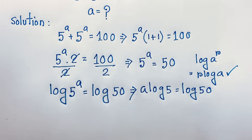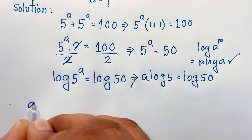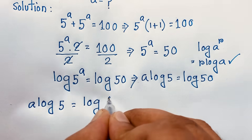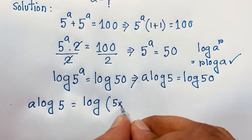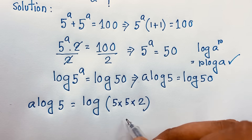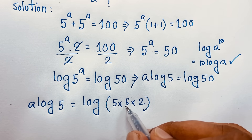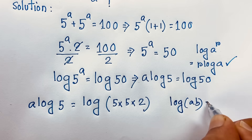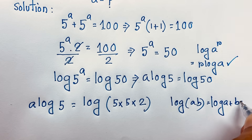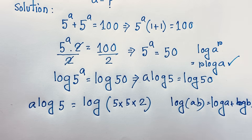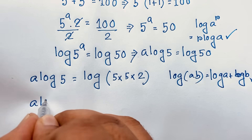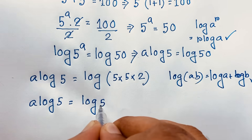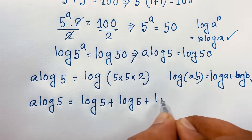This log 50 — you can see A log 5 is equal to log 50. You can see it will be log of 5 squared, I mean 5 times 5 times 2. 5 times 5 will be 25, and 5 times 2 will be 50. Now, one of the natural log formulas: log A times B will be log A plus log B. So according to this formula, it will be A log 5 is equal to log 5 plus log 5 plus log 2.